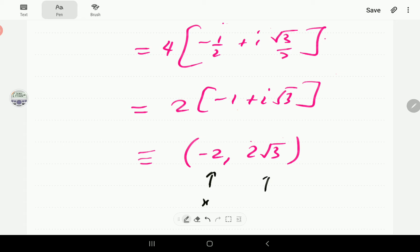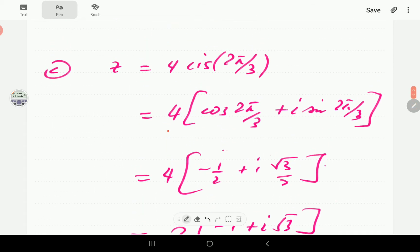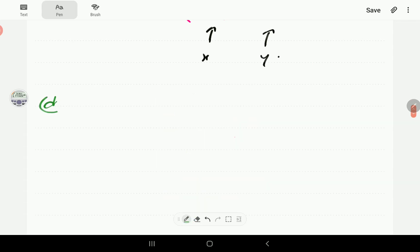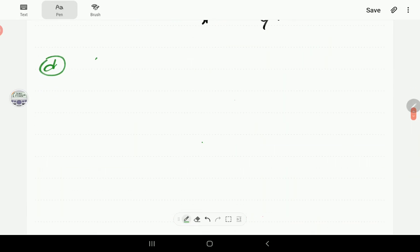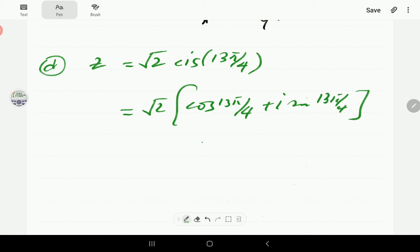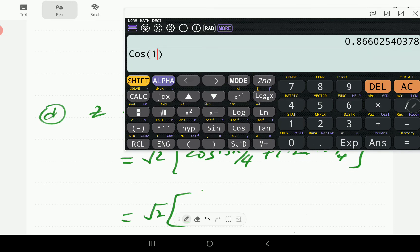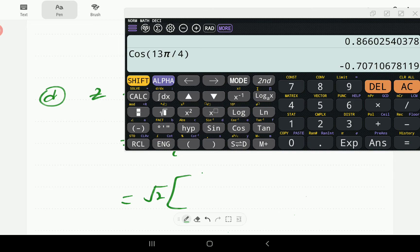That is part (c). In part (d) we have root 2 cis of 13 pi on 4. So this one is going to be cosine 13 pi on 4 plus i sine 13 pi on 4. Punching this in the calculator, cosine 13 pi over 4 is negative 0.707, so that is 1 over root 2.